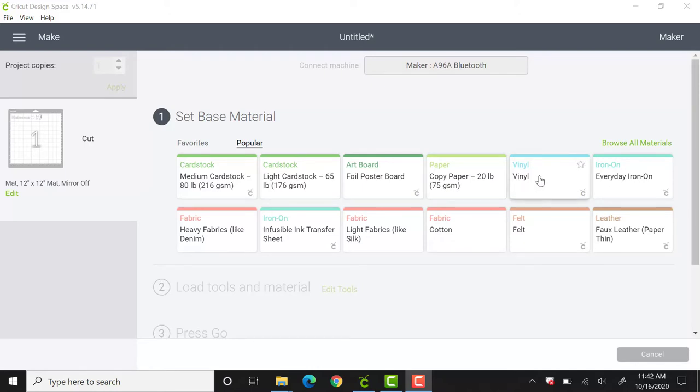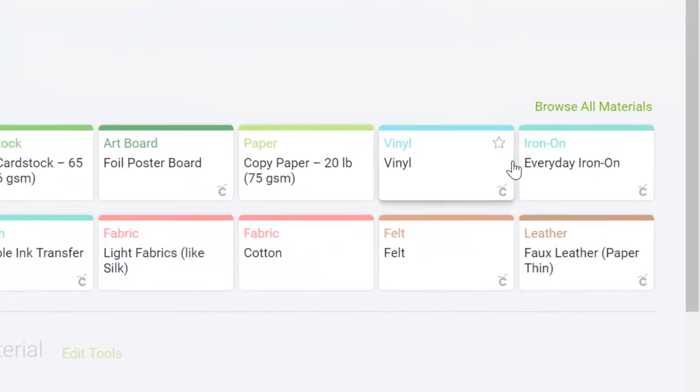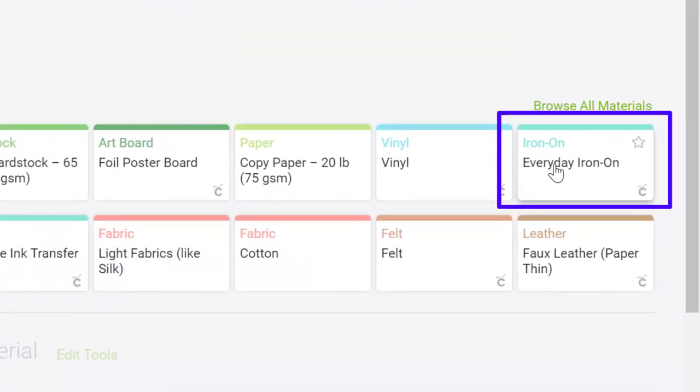Once you've connected your device with the Maker, make sure you choose iron-on vinyl, not vinyl, for your material. The Maker will give you a reminder to mirror your image.